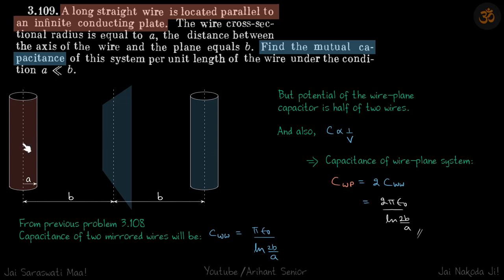We know the capacitance between the wires, so the capacitance here is going to be twice of that, because the potential is half and capacitance is inversely proportional to potential.